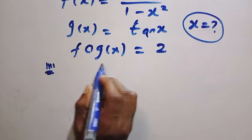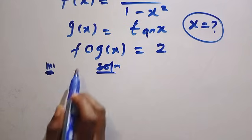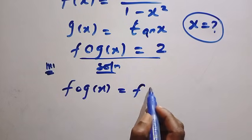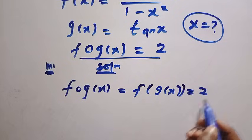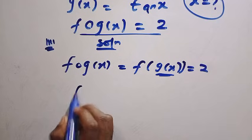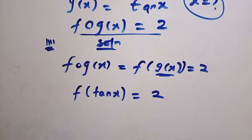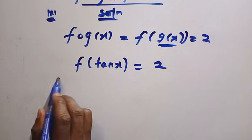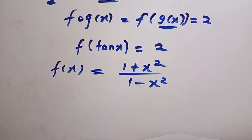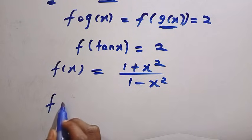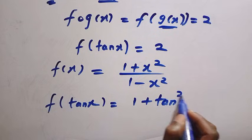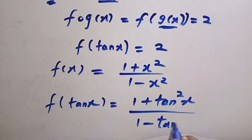In the first method, let's consider the solution. If I consider from the last part of this question, which is f(g(x)), this equals 2. Note that g(x) here is given as tan x. By replacing it, we have f(tan x) = 2. Recalling the first function, f(x) = (1 + x²) / (1 − x²), and by replacing every x with tan x, we have f(tan x) = (1 + tan²x) / (1 − tan²x).